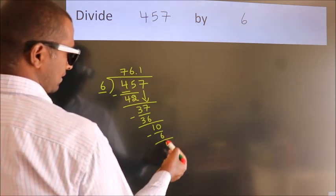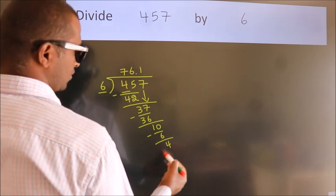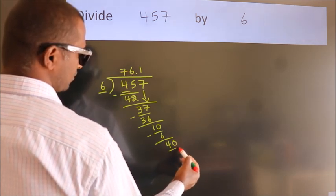After this, we already have the decimal. So, directly take 0. So, 40.